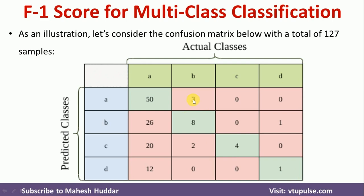When it comes to the value 3, there are 3 class B examples that were classified as A — that is a false positive for class A. Similarly, 26 examples are of type A but were classified as B — that is a false negative for class A. They are of type A but classified as B, which is why it is called a false negative. Those 3 are of type B but classified as A, which is why they are called false positive. For other values in the matrix, you can similarly identify which are false positives and which are false negatives.